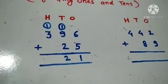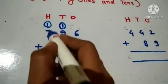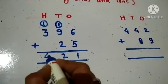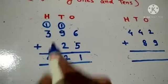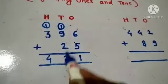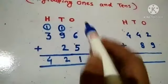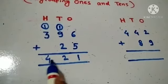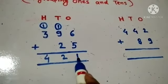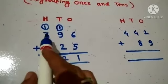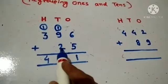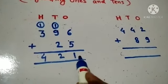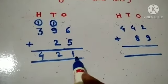Now add the 100's: 1 plus 3 is equal to 4. Now we have 400, 2 10's, and 1 one — that is the number 421. So 396 plus 25 is equal to 421.